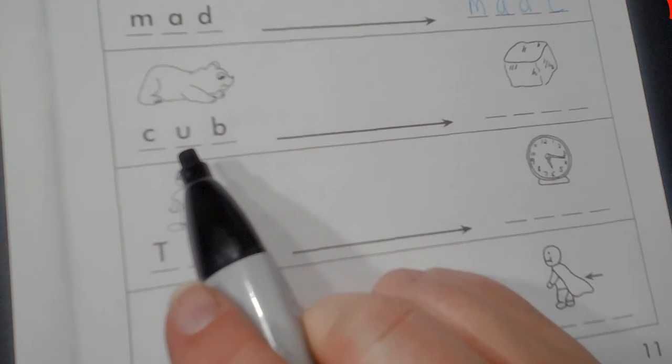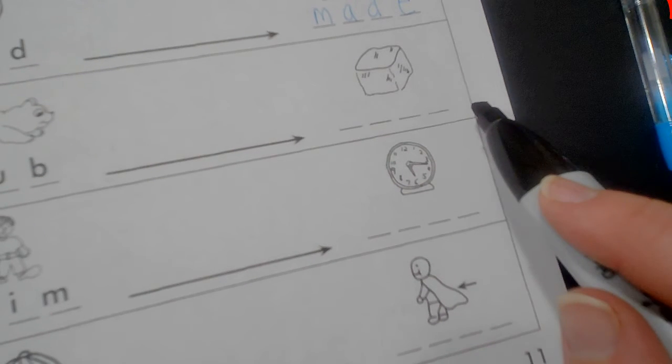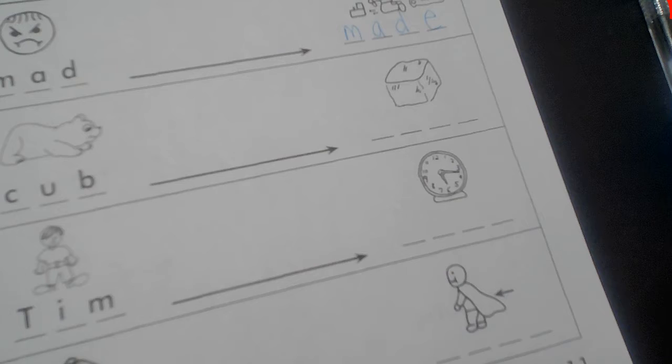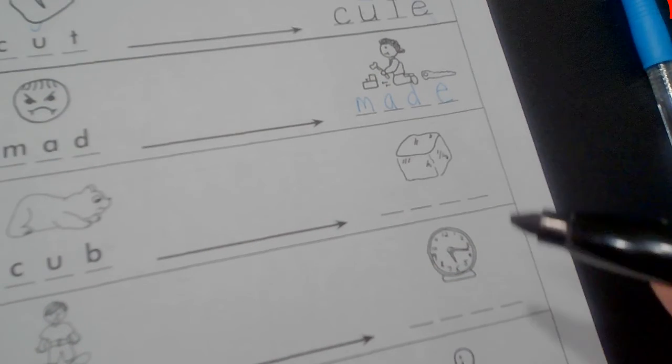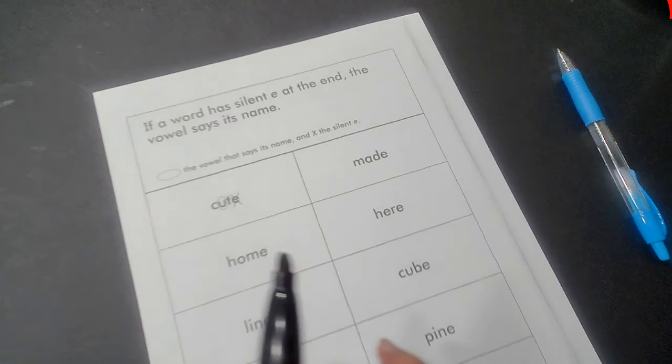So go ahead and finish. You're going to read the word and then add the E to the end of the word. Write it out and see, does it make sense? This says made and this picture makes sense with that word made. When you are finished, we're going to go to our next page.